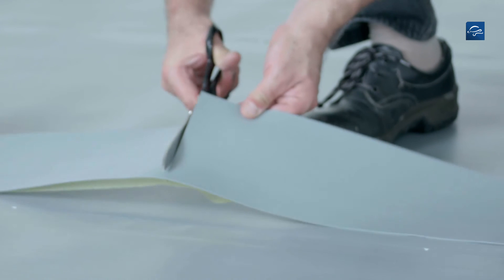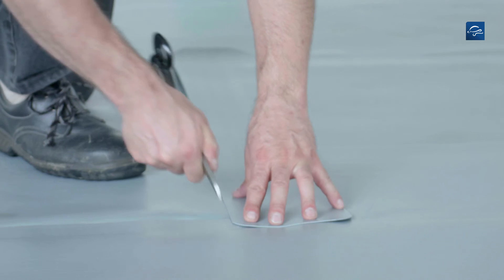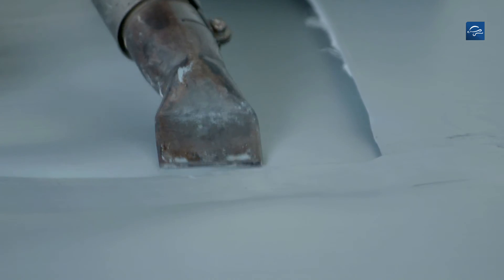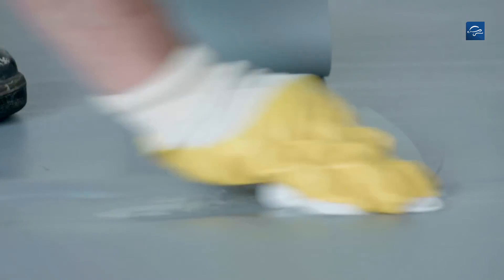Cut the strip to size and round off the corners. Then according to the position of the strip, mark and plane the seam edges and clean the substrate using Rhepanol H Seam Cleaner.